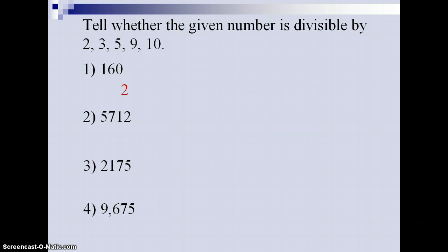Here are your answers now. Number 1: 2, 5, and 10. Number 2, we have 2 and 3. That would be it. 5, 9, and 10 all do not divide that number. Number 3, the answer would be 3 and 5. And number 4 would be 3, 5, and 9.